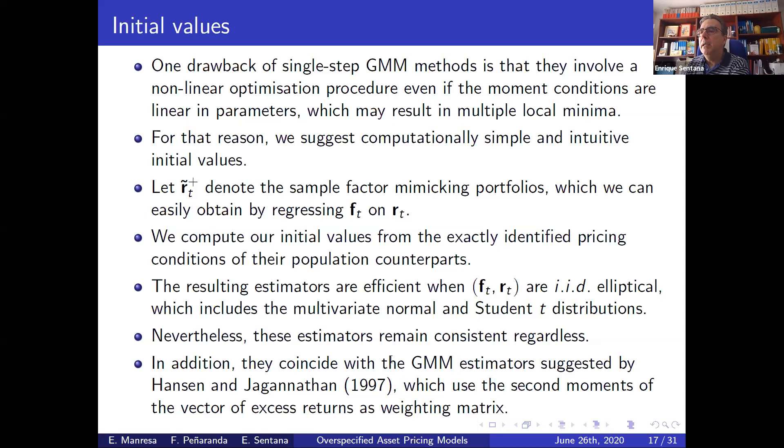These estimators coincide with the Hansen and Jagannathan estimators, who suggested using a second moment matrix instead of the covariance matrix of the moment conditions as a weighting matrix.